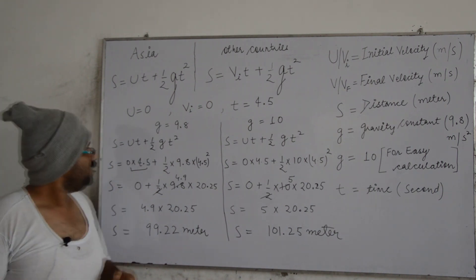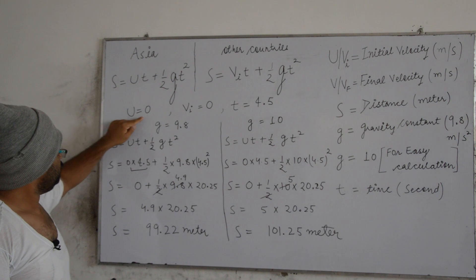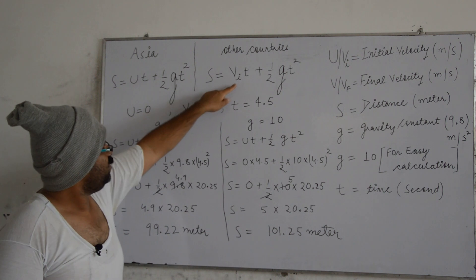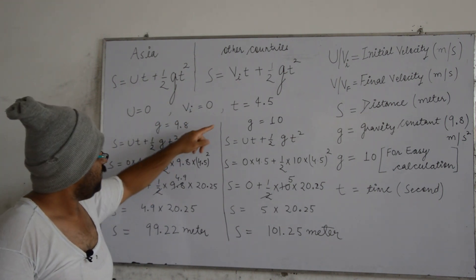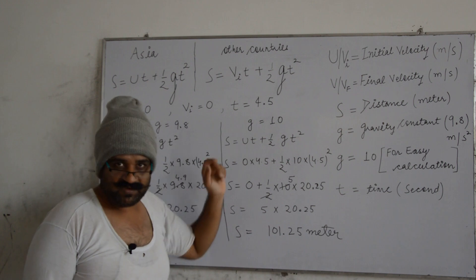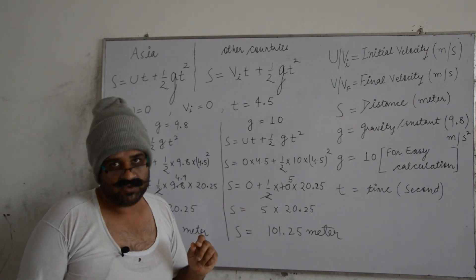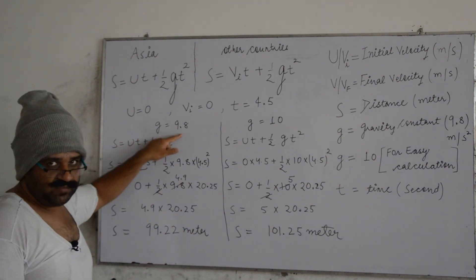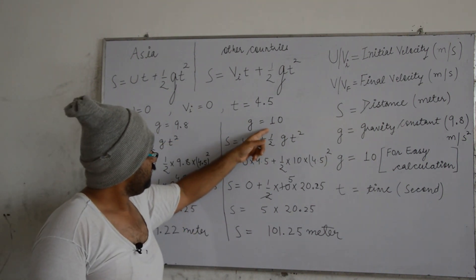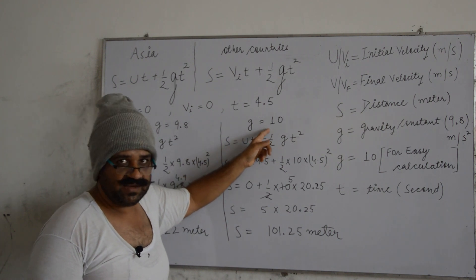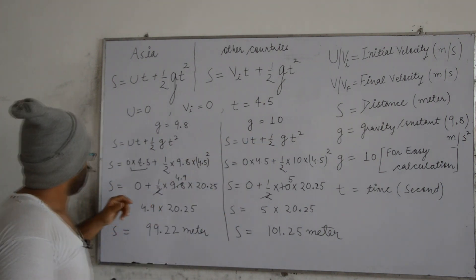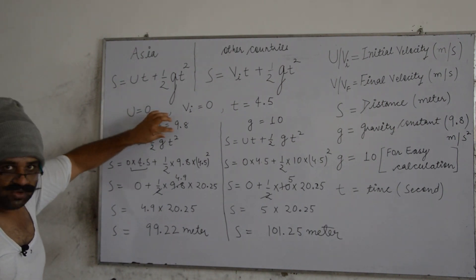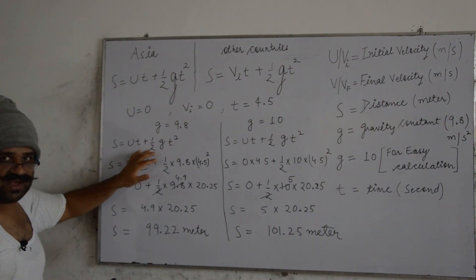Now write down the values we have. We have initial velocity zero, my nephew told you initial velocity for this equation same zero. Time 4.5 seconds, the stone took 4.5 seconds to hit the water after being dropped. Okay. Gravity 9.8, if somebody wants to calculate the distance while taking gravity 10 you can do it, no problem. Okay.